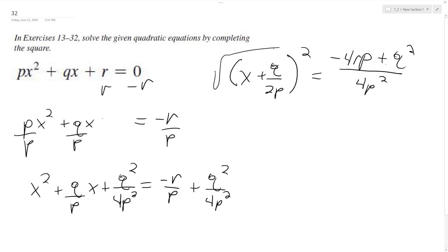And then take the square root of both sides. We get x plus q over 2p is equal to the square root of negative 4rp plus q squared.